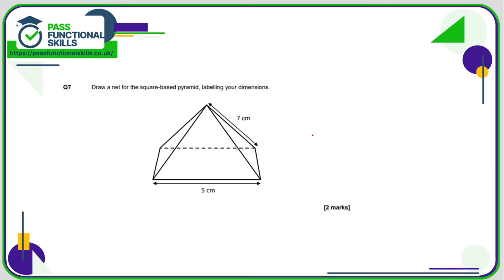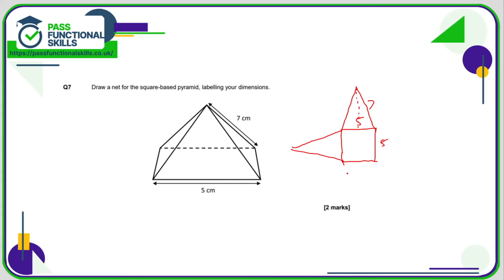Question seven: draw a net for the square-based pyramid. It's got a square base which is five by five, and on a square-based pyramid we have a square and four triangles. I'm going to draw four triangles — the slanted height is seven, not the vertical height, so ignore any dotted line. All four of these triangles are going to be identical, and there we have it.